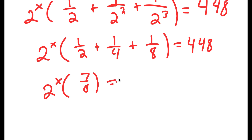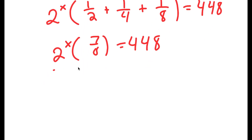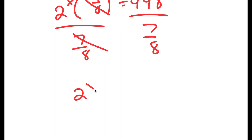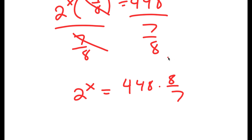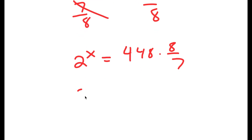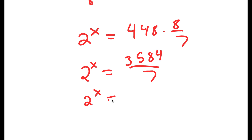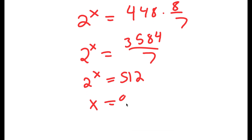So now I have 7 over 8 times 2 to the power of x is equal to 448. To isolate 2 to the power of x, I divide both sides by 7 over 8, giving 2 to the power of x equals 448 times 8 over 7. Now 448 times 8 equals 3,584, and 3,584 over 7 equals 512. So 2 to the power of x equals 512, meaning x is equal to 9.